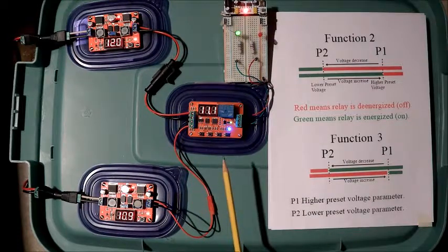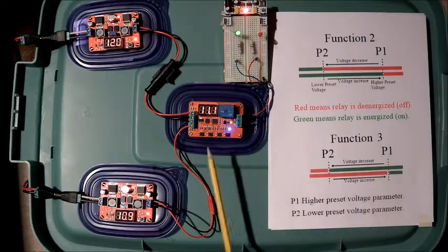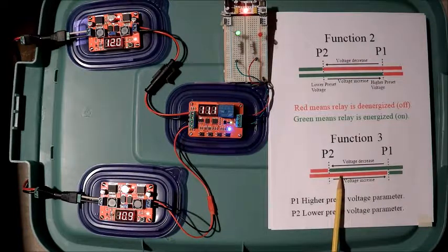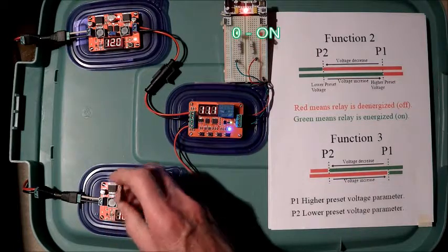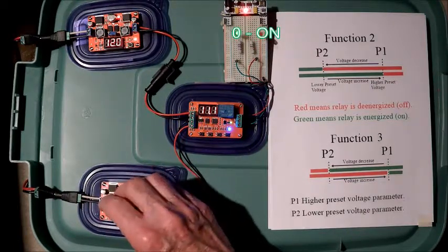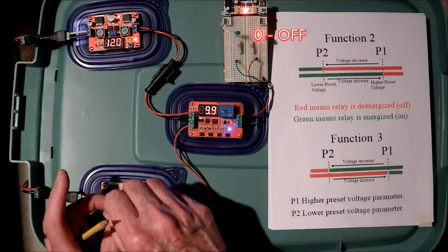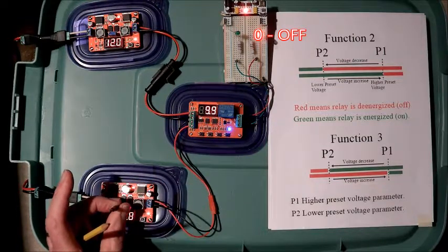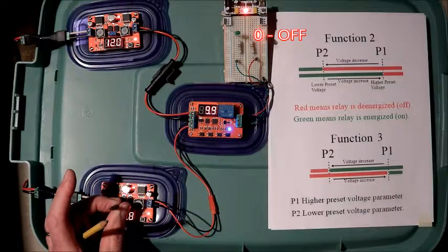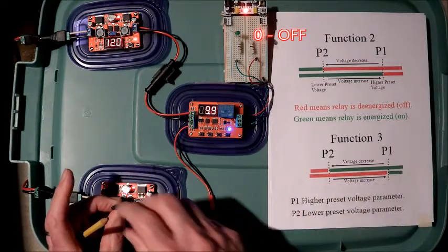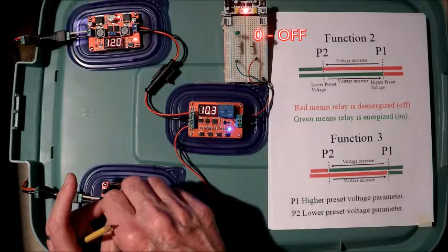In Operational Mode, I'm above the preset, higher preset value. I'm above the lower preset value. The relay is energized. Green light being on. Decrease the voltage. 9.9. Voila. The energized relay de-energizes. Turns off. It will remain off. The relay will remain off until I hit the high preset value.